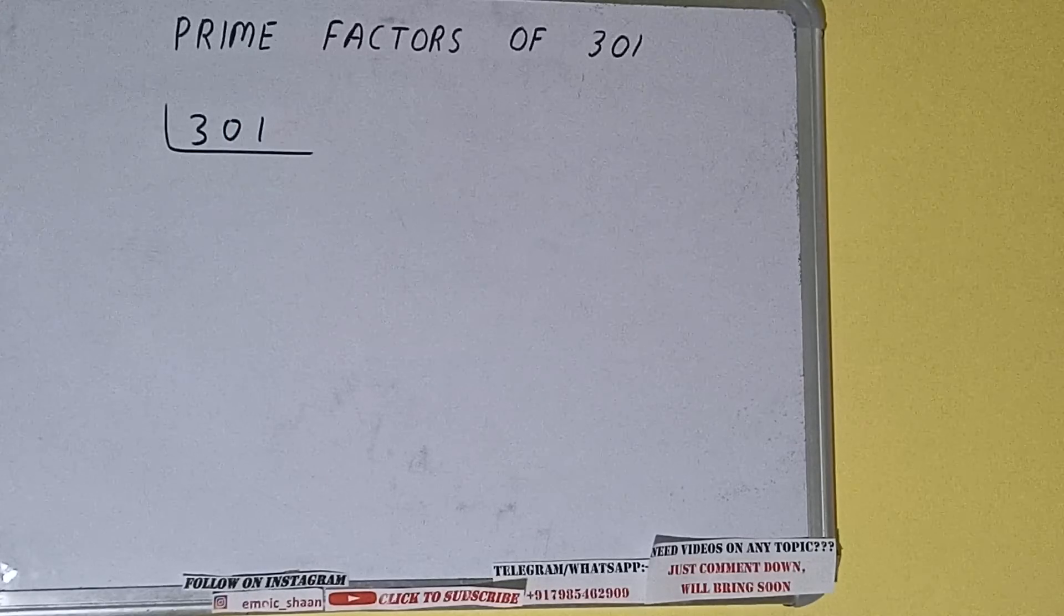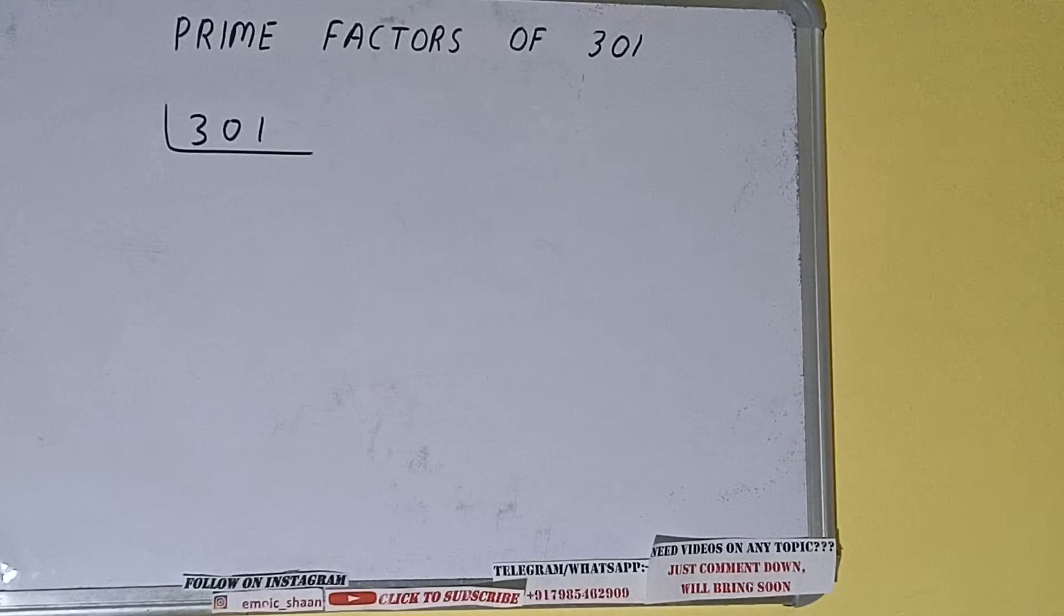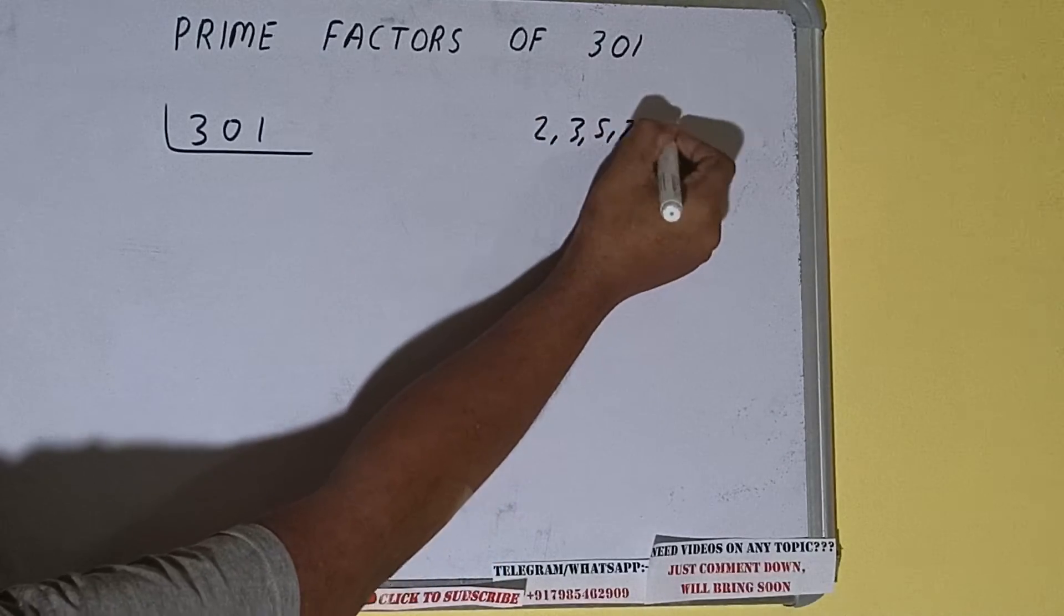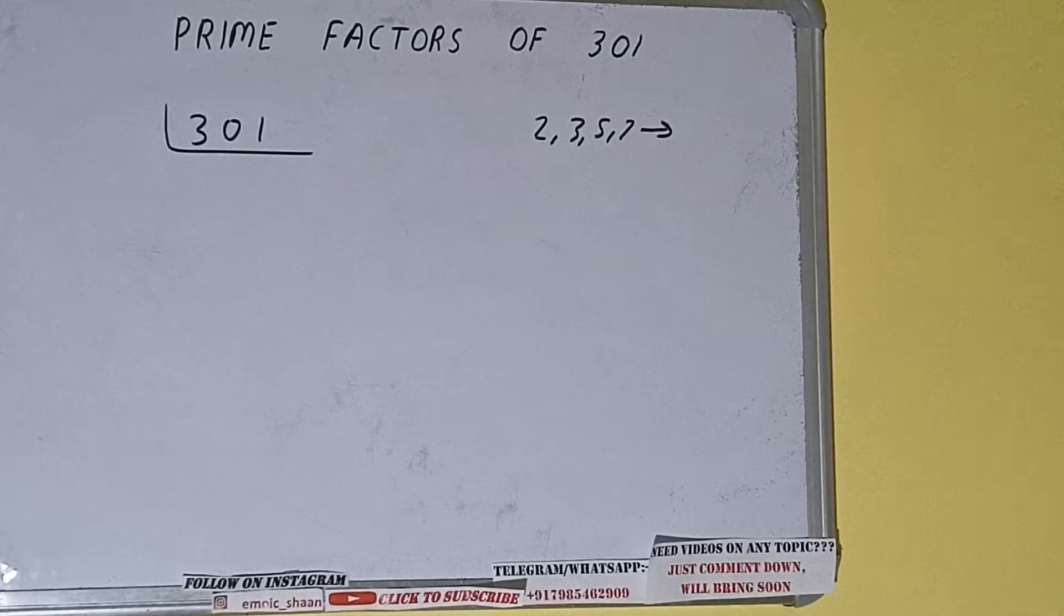The next thing we need to know about is what are prime numbers. Prime numbers are numbers that are divisible by one and the number itself, like 2, 3, 5, 7, and so on. All right, so we'll be checking with the lowest prime number we have, that is 2. Is the number 301 divisible by 2?